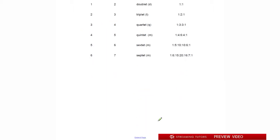Let's use an example and do one more intensity analysis. Let's say we have a CH3, a CH2, another CH2, and a Br. We'll label them A, B, and C — so A is the CH3 furthest from the Br, B is the middle CH2, and C is the CH2 closest to the Br.